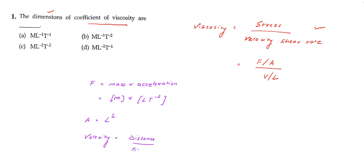Then we have velocity, which can be written as distance by time. The dimension of distance is L and time is t, so velocity has dimension L·t⁻¹. Now we know the dimensions of all the symbols, so let us find the dimension of viscosity.